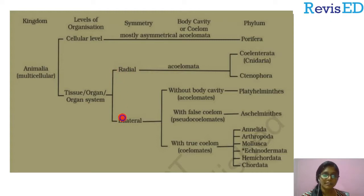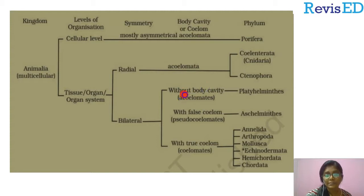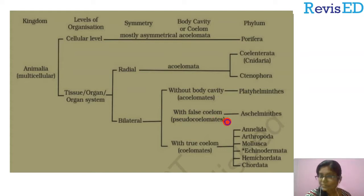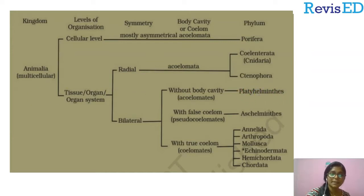Based on symmetry, animals are classified further into bilaterally symmetrical organisms. To identify which phyla come under this, we classify them more based on body cavity or coelom. There are acoelomates in this category, and also pseudocoelomates having a false coelom. The acoelomates here are Platyhelminthes — the flatworms — which have no body cavity and are bilaterally symmetrical.